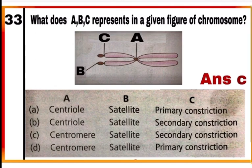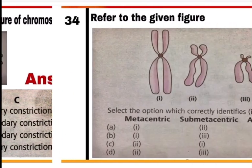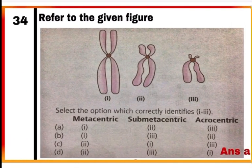Question 33: What do A, B, and C represent in the given figure of a chromosome? Option C — A is the centromere, which is a primary constriction; B is the satellite, a small fragment formed due to secondary constriction on the chromosome; and C is the point of secondary constriction.